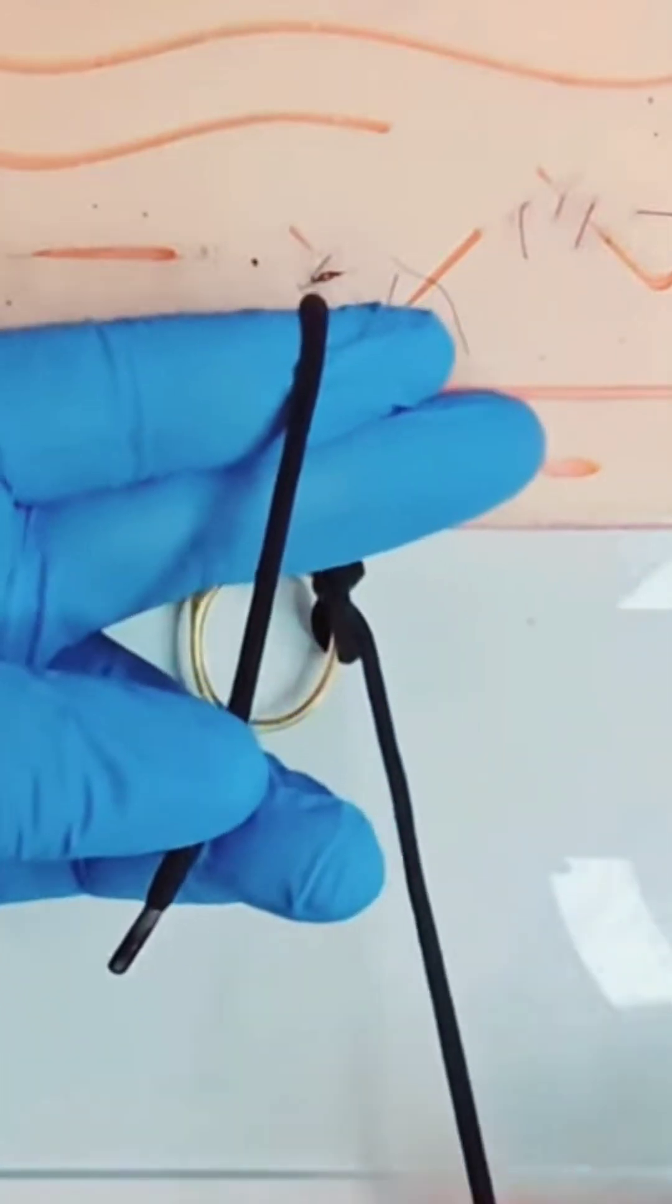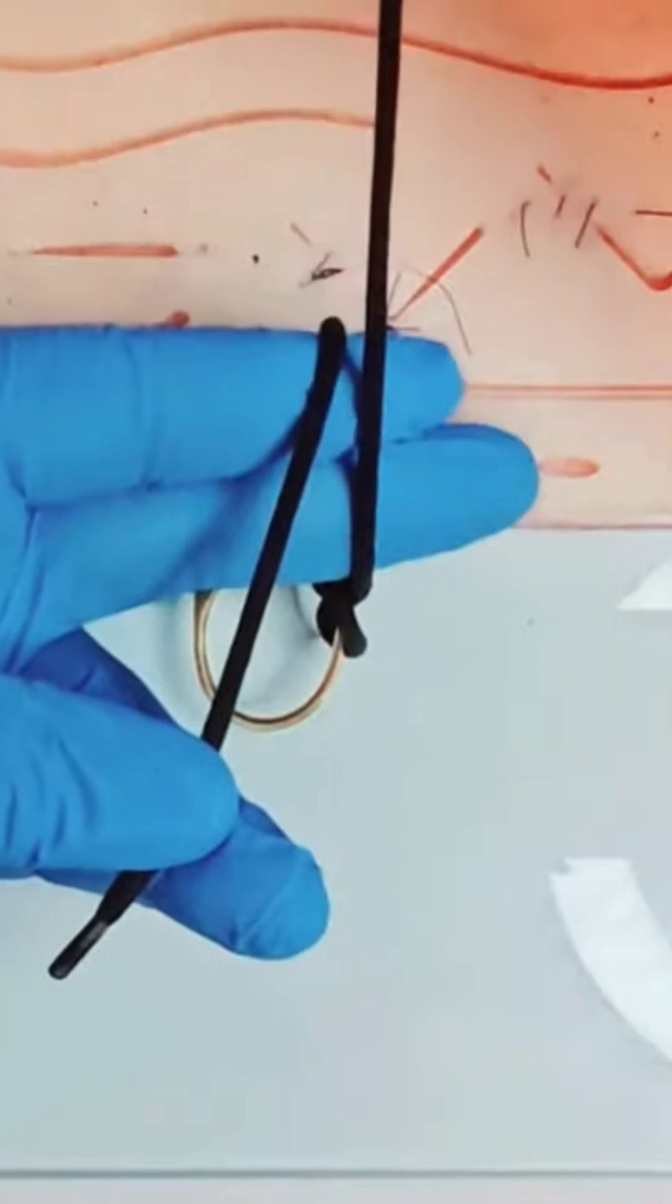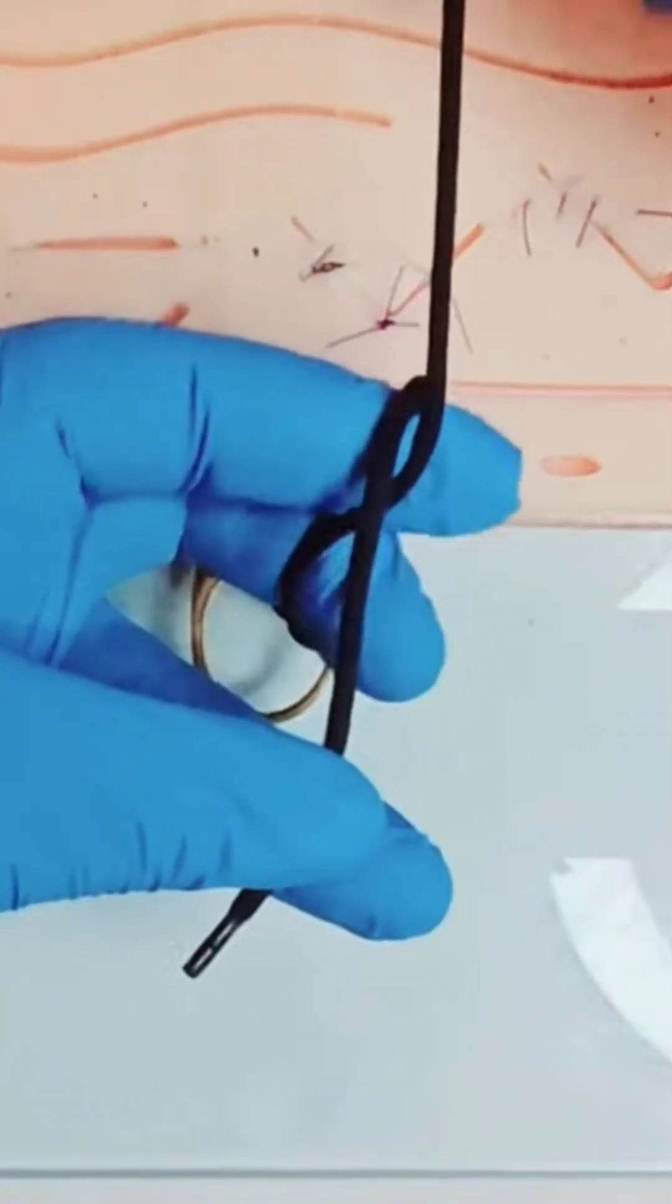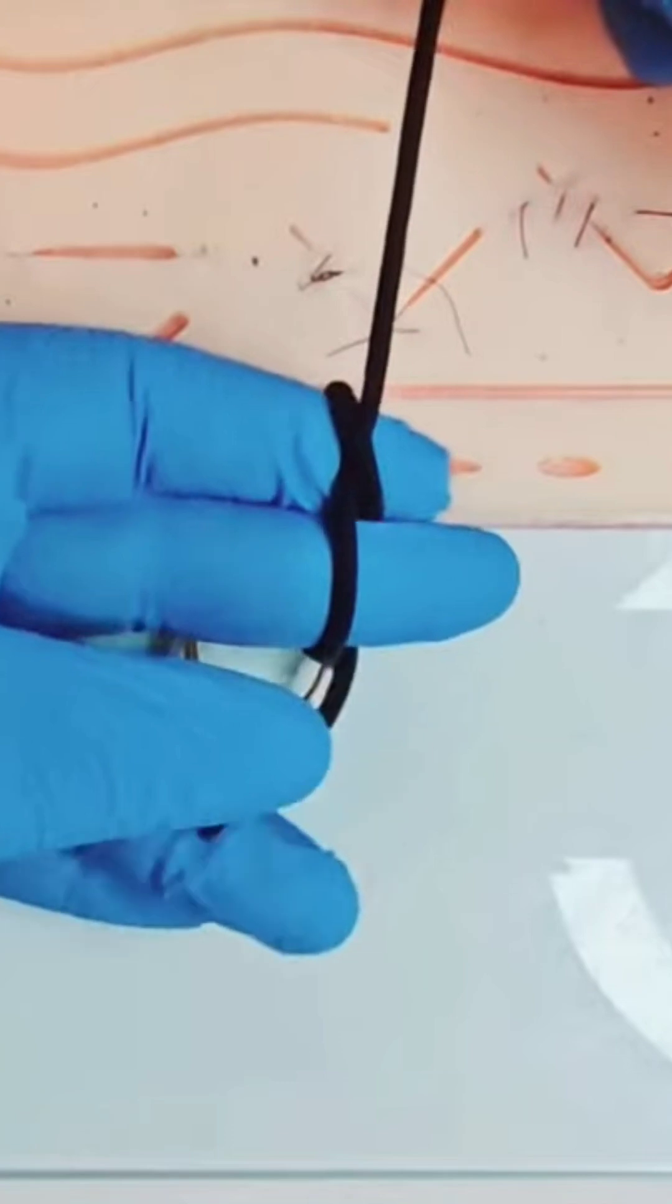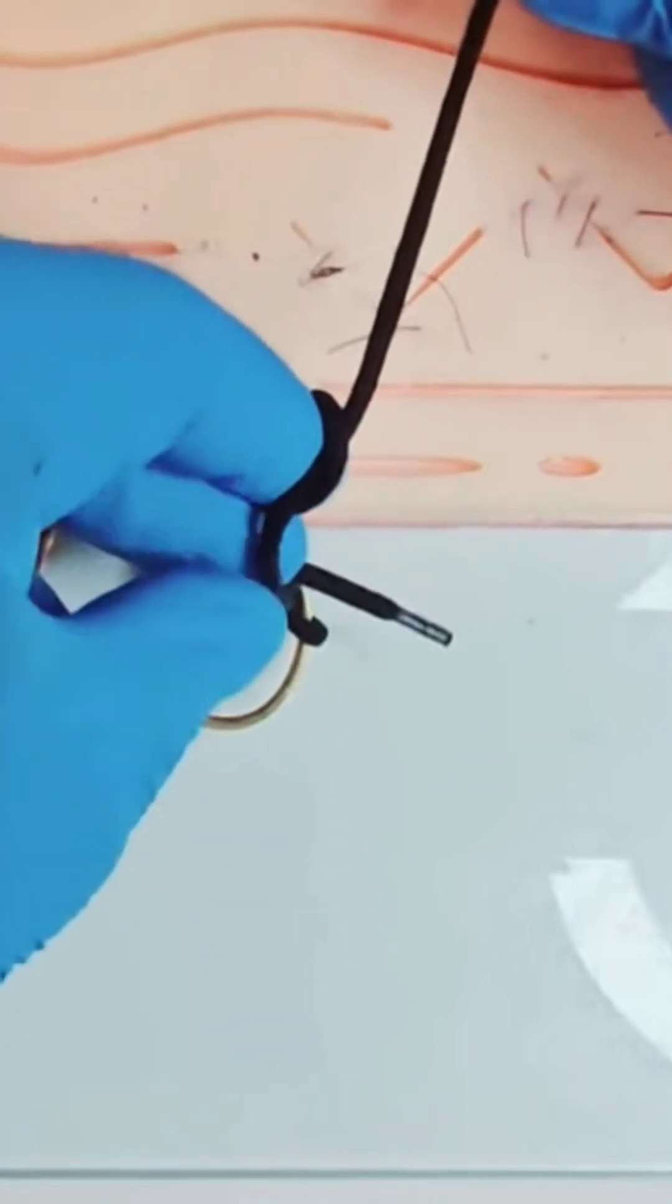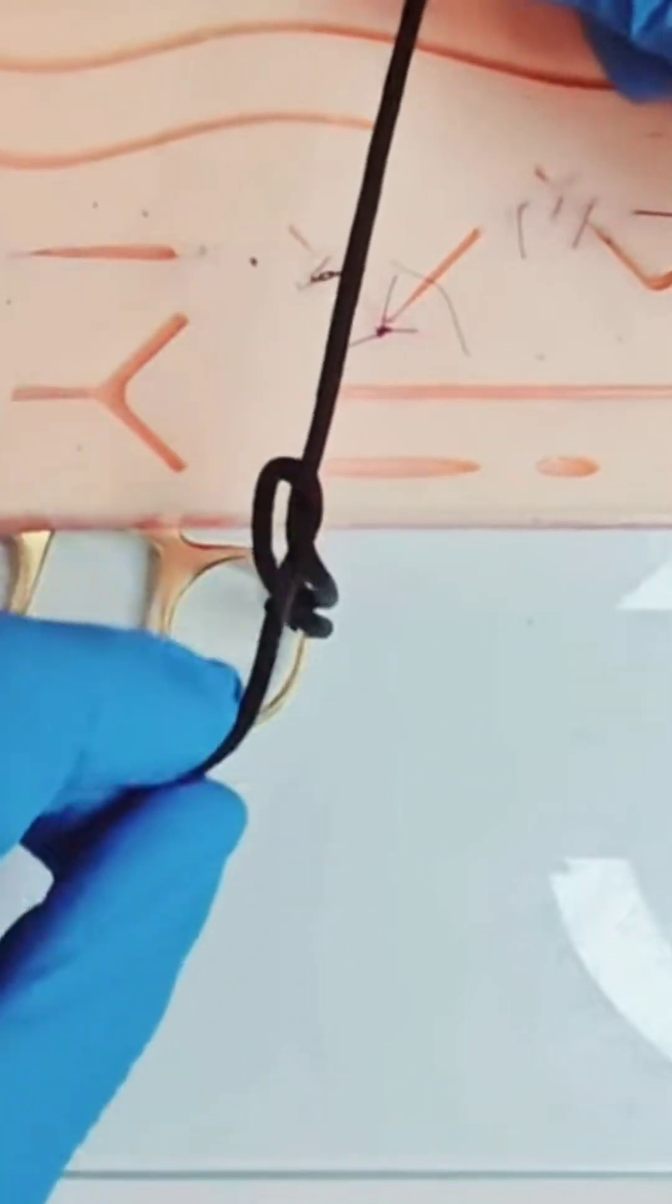Run the long suture up the index and middle fingers parallel to the short thread. Flex the middle finger over the long thread and push the short suture under it. Squeezing the short thread between index and middle, pull the short thread toward yourself.